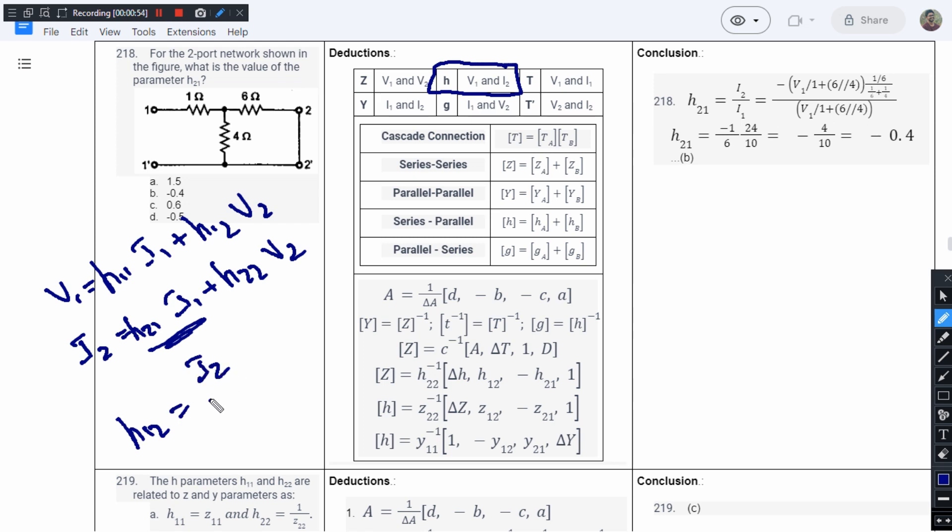So this H12 will be equal to I2 divided by I1. So first let us try to find the value of I2. The current I2 is the short circuit current and it can be found by using current division rule.